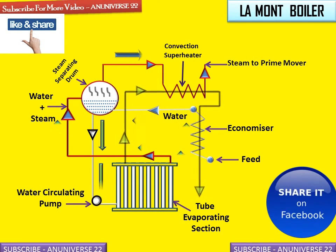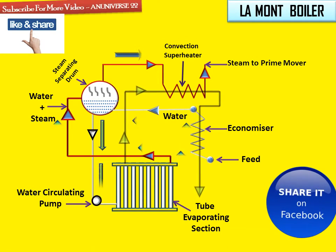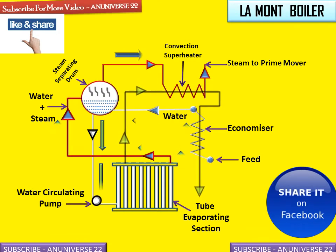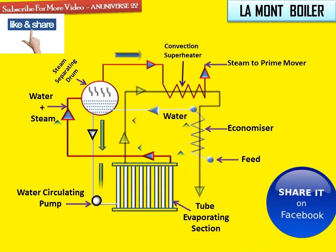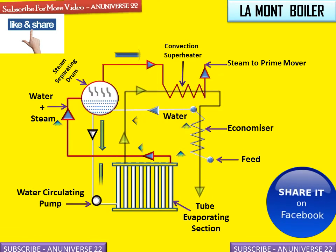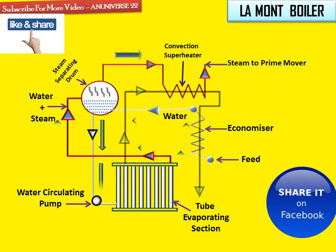The working pressure of this boiler is about 170 bar, and it has a steam generation capacity of about 50,000 kg per hour at a temperature of 773 Kelvin.